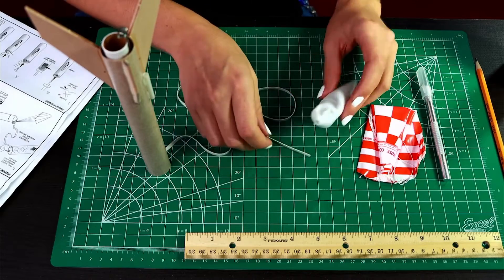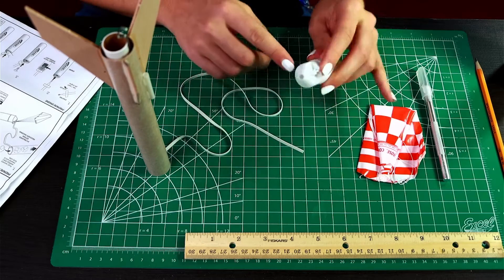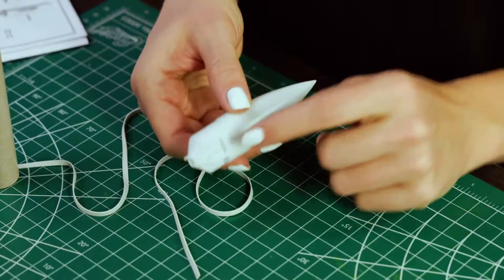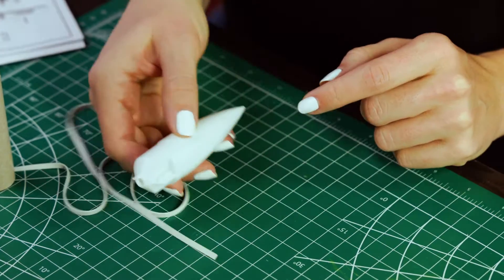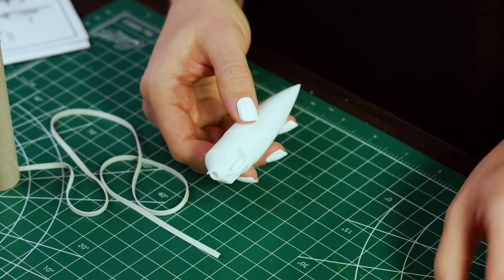Now we are going to attach the shock cord to the nose cone and attach our parachute. So the first step is cutting out this little eyelet, just this little piece of plastic from the nose cone, but don't cut off the whole thing.